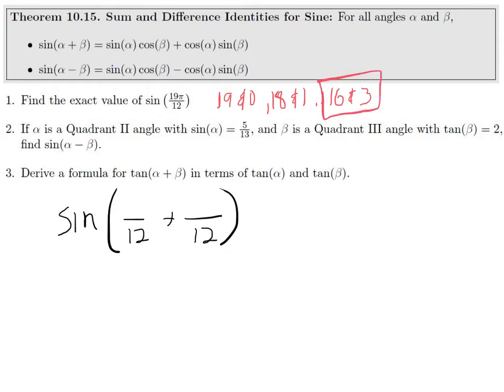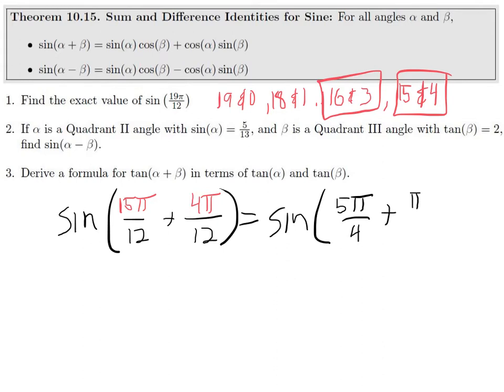15 and 4 would also work. You just want to find some values that will reduce with 12. So let's go 15π/12 and 4π/12. If we reduce 15 and 12 by dividing by 3, we get 5π/4, and 4π/12 reduces to π/3. Both of these values we can find with the unit circle what sine and cosine of both of these values are. So we can find the exact value for sine of 19π/12 with our new identity.